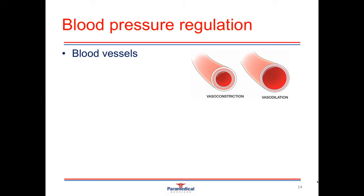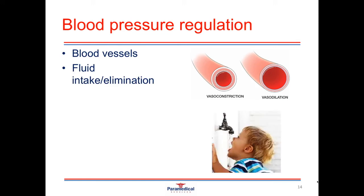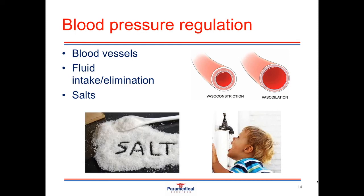Another method your body uses to regulate fluid balance is the intake and elimination of fluid. We take in water through ingestion and eliminate fluids through sweating, respiration, and urination. The amount of salts, minerals, and electrolytes in our blood or tissues also helps maintain or regulate blood pressure, and it's very important that we don't over-ingest salt products because it actually results in an increase in blood pressure.